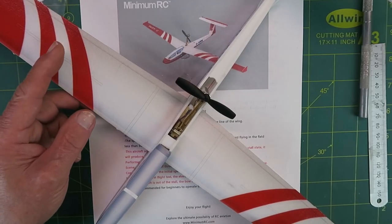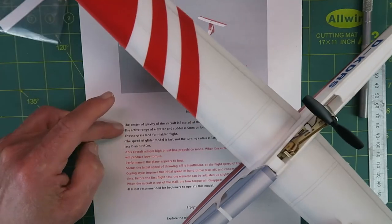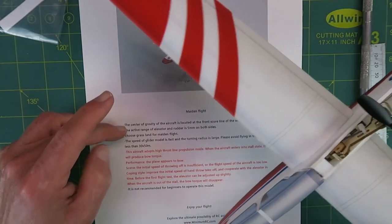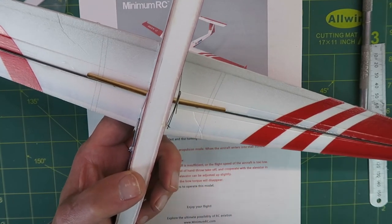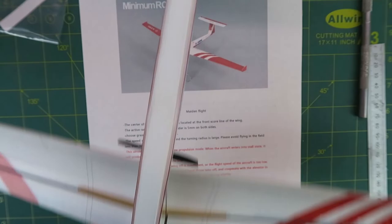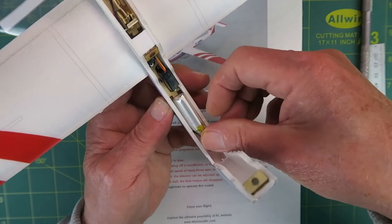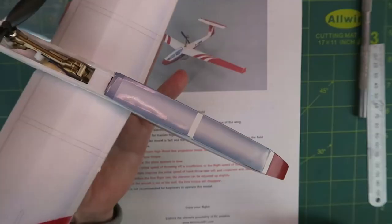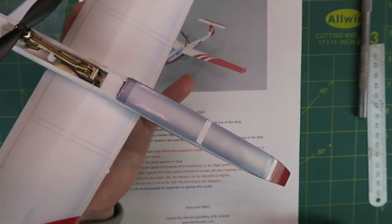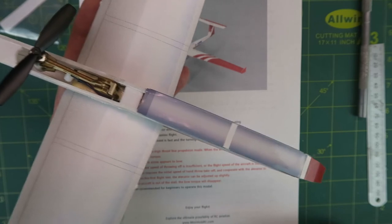Finally then the model is complete. The center of gravity is at the front score line of the wing, which puts it here—see where I Sinoed the carbon rod on there. With the battery then just in front of the servo ply plate, I am balanced upon that point. So the center of gravity should be fine there.